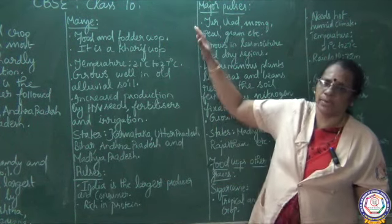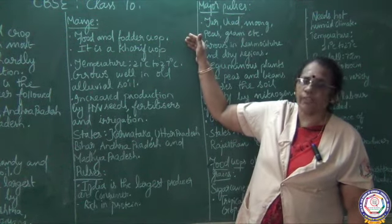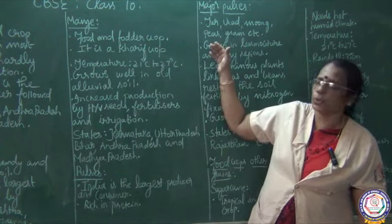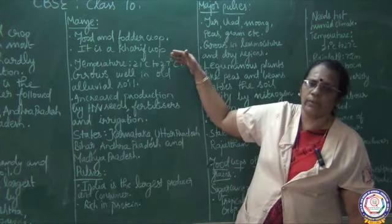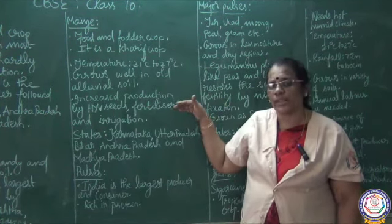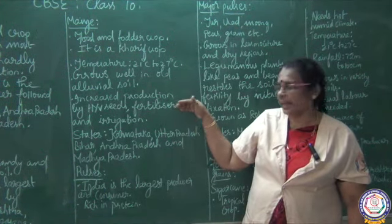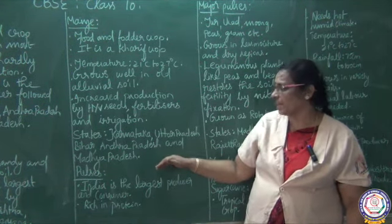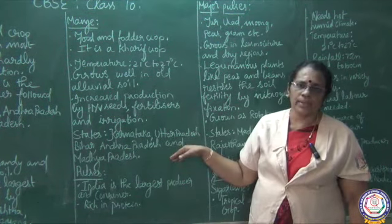To recap maize: it is a food crop as well as a fodder crop, and a Kharif crop. Temperature requirement is 21 to 27 degrees Celsius. It grows in old alluvial soil. Increased production is possible through HYV seeds, chemical fertilizers and irrigation facilities. Major producing states: Karnataka, Uttar Pradesh, Bihar, Andhra Pradesh and Madhya Pradesh.